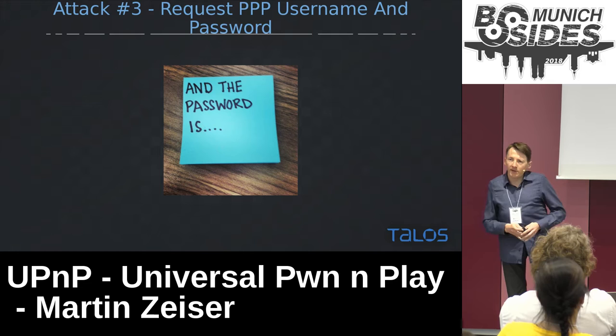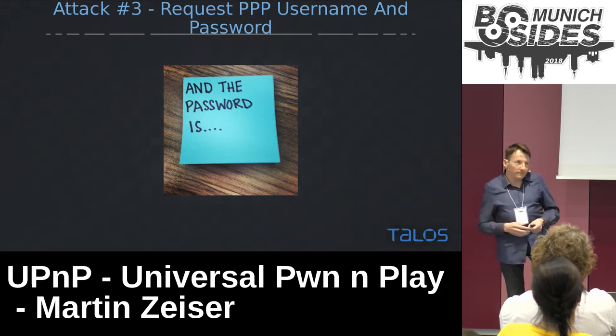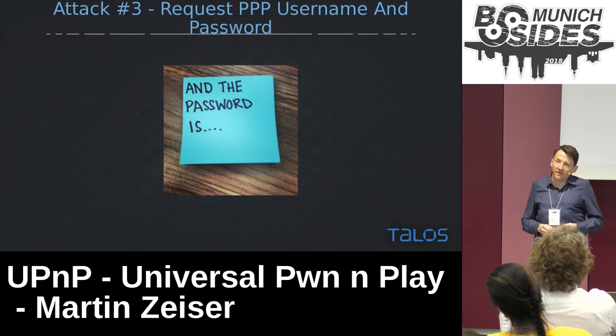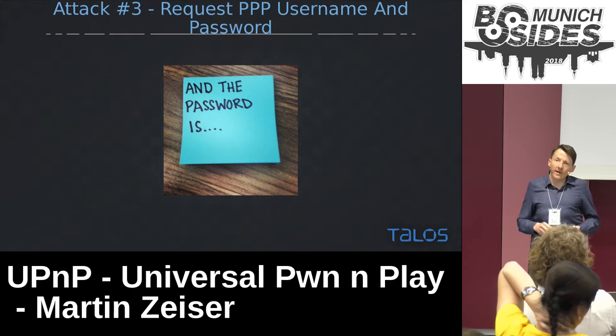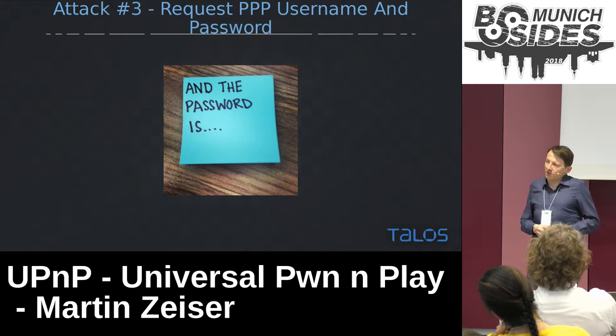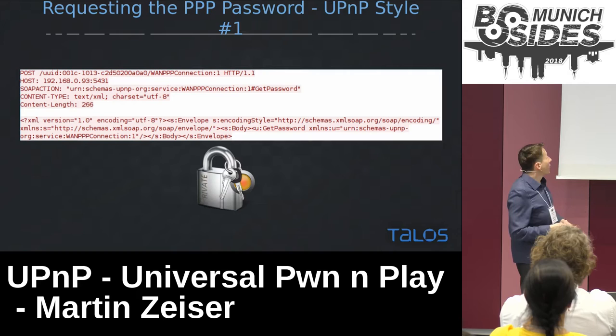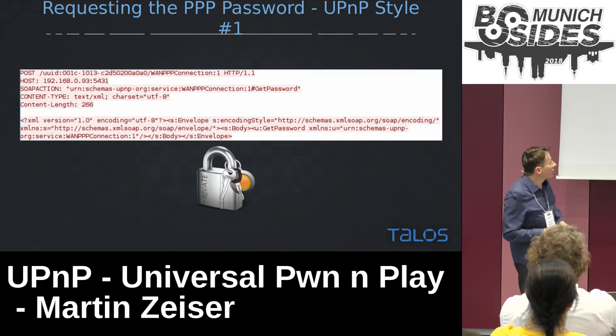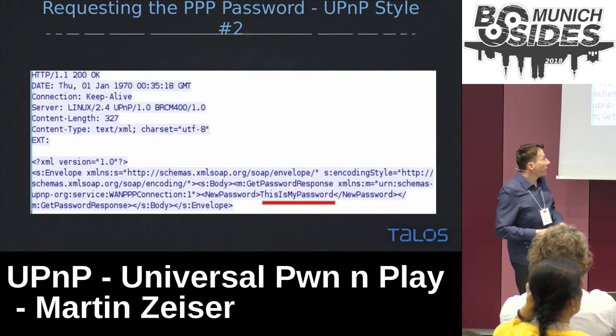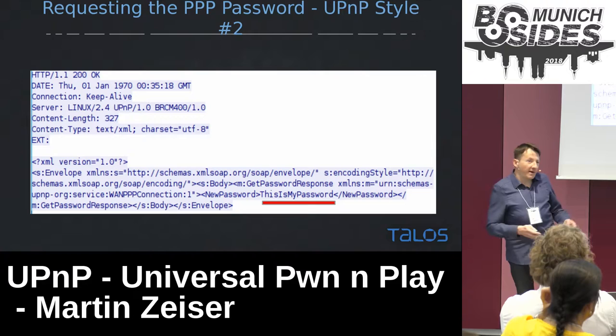Requesting the PPP username and password — that's actually a feature because it's even in the standard, defined in the UPnP docs. Same deal: plain text request, call the PPP password function, can you please send it over? It's a simple SOAP request on the HTTP interface — you see the WANPPPConnection interface being called with the GetPassword function. Simple stuff. The reply comes back — sure enough, here's the password. Once again, no authentication. Just talk to it. It's a feature.